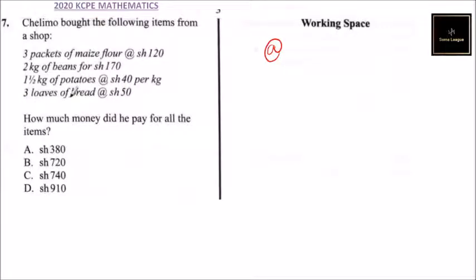Three loaves of bread at 50 shillings, so you multiply 50 by three to get the total cost of bread. How much money did he pay for all the items? To be able to get that, this symbol means each packet was costing 120.